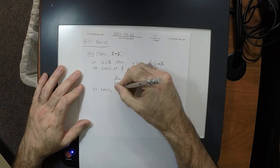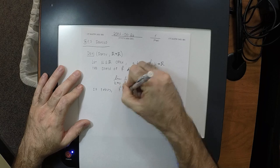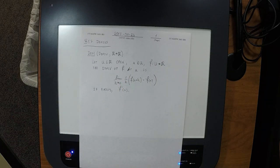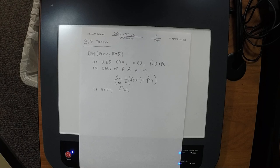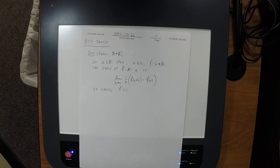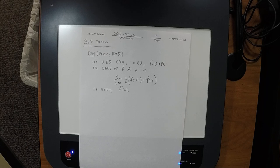The way we denote it is with F prime at A. There's nothing strange about this definition — this is the usual definition. The only thing that might be minorly strange is that instead of writing division by H, I wrote multiplication by 1 over H, which is obviously the same. In the first place, to have a derivative at a point, a function must first be defined there.